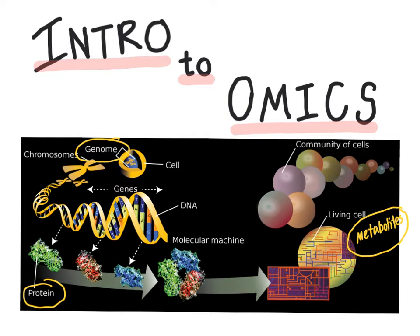In the world of omics technologies, we can look at any level of this central dogma to evaluate on a large scale: the genes present within an organism — that would be genomics; the proteins present — that would be proteomics; or the metabolites present — that would be metabolomics. By looking at one or more of these three types of biomolecules simultaneously rather than just one gene, protein, or molecule, we gain a more complete understanding of a biological system.